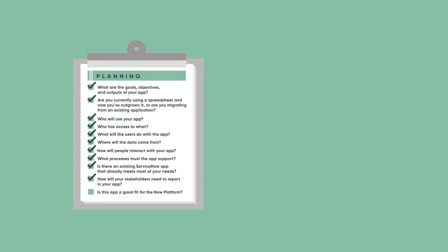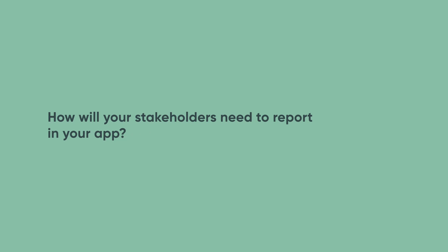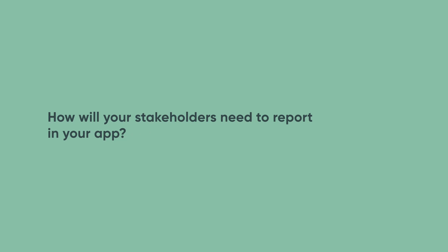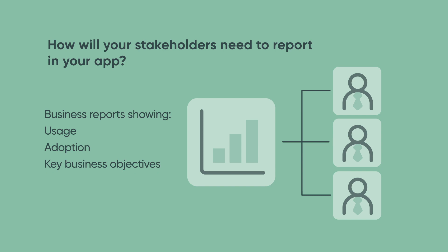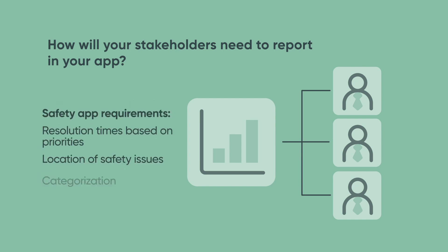Let's think about outputs. How will your stakeholders need to report in your app? If your app is meeting a business purpose, you may need to provide reports showing usage, adoption, and key business objectives. In Luke's case, there are specific requirements about resolution times based on priorities and other objectives related to the location of safety issues and categorization.